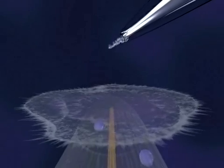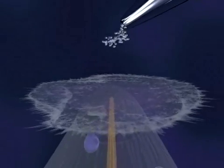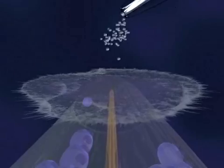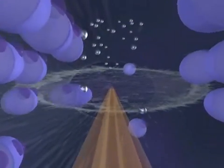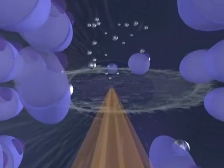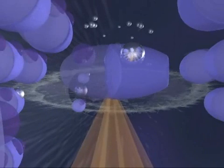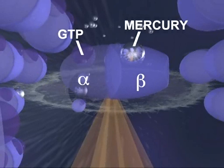When mercury ions are introduced into the culture medium, they infiltrate the cell and bind themselves to newly synthesized tubulin molecules. More specifically, the mercury ions attach themselves to the binding site reserved for guanosine triphosphate, or GTP, on the beta subunit of the affected tubulin molecules.